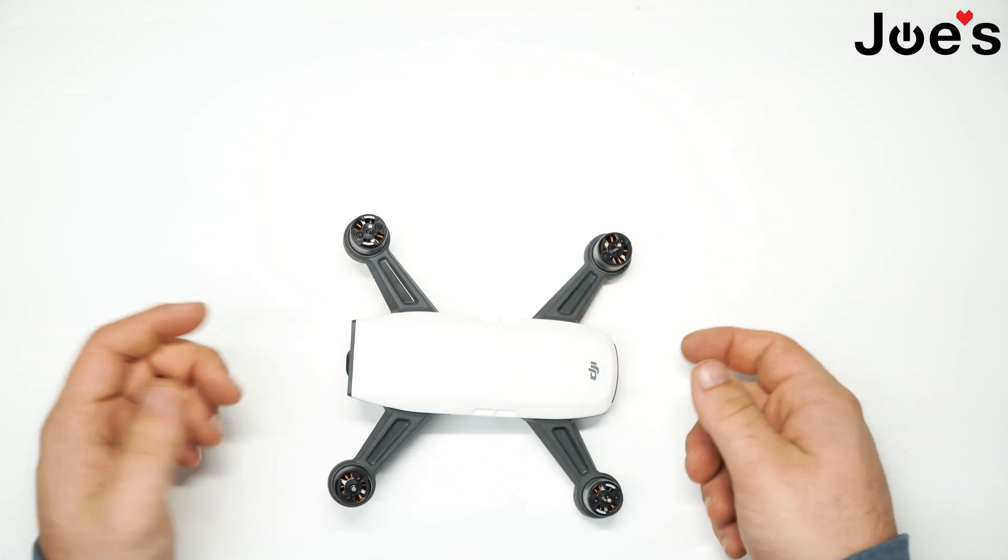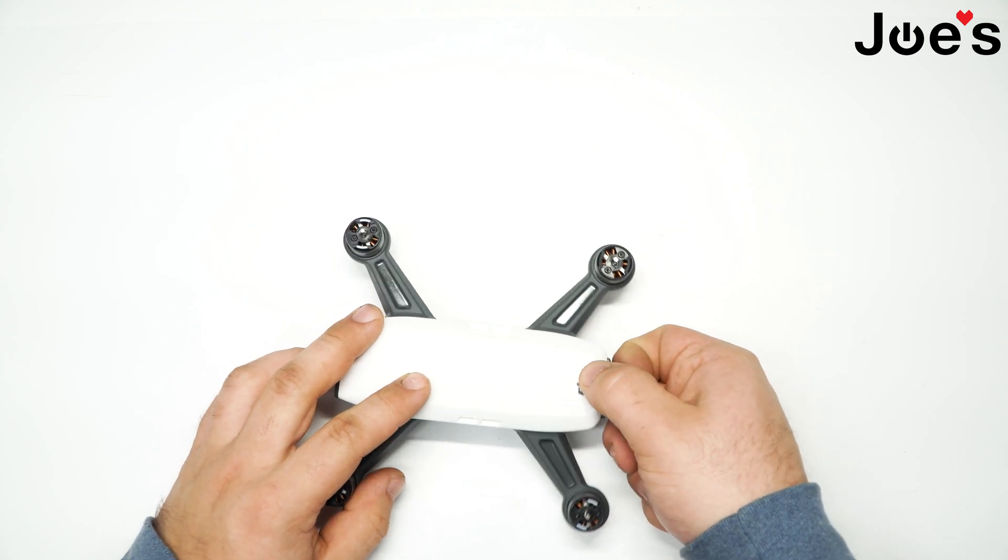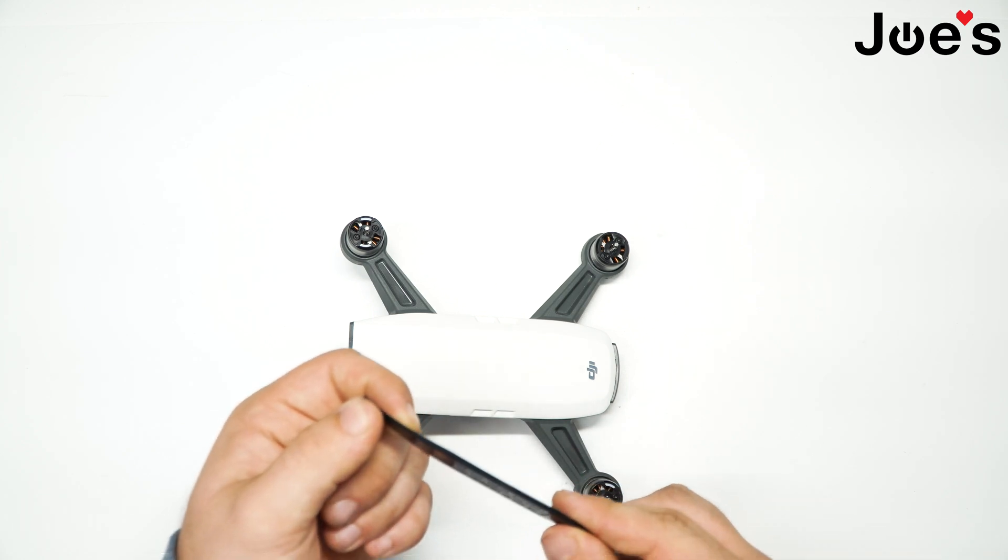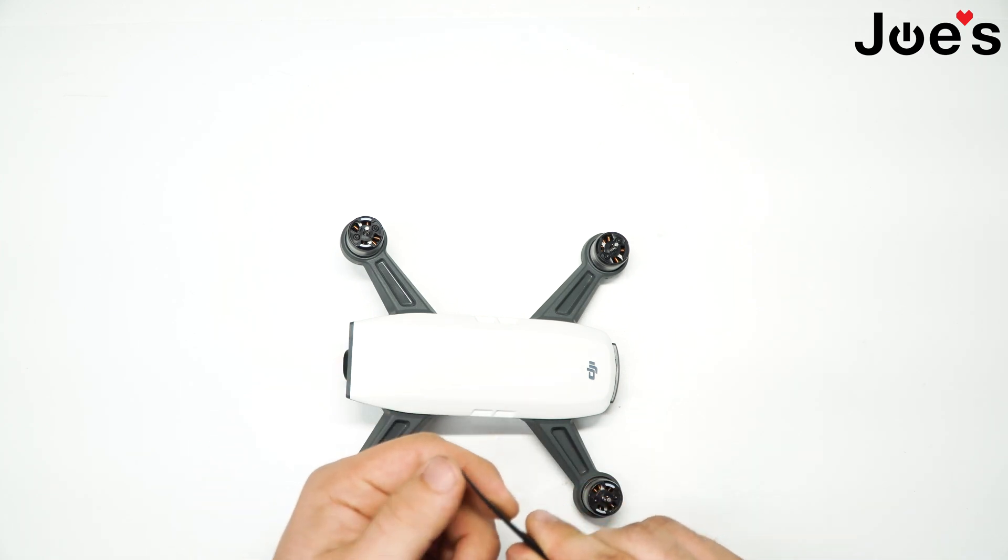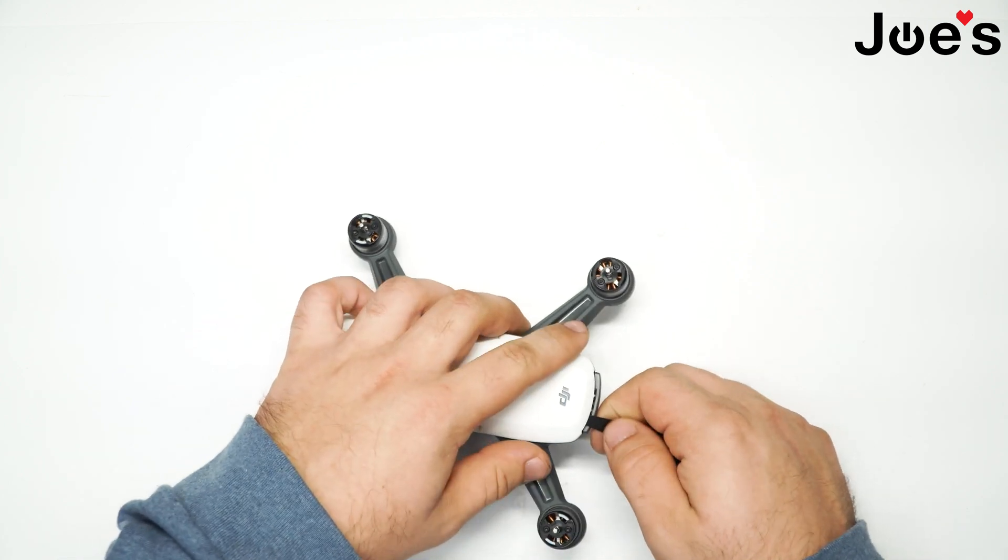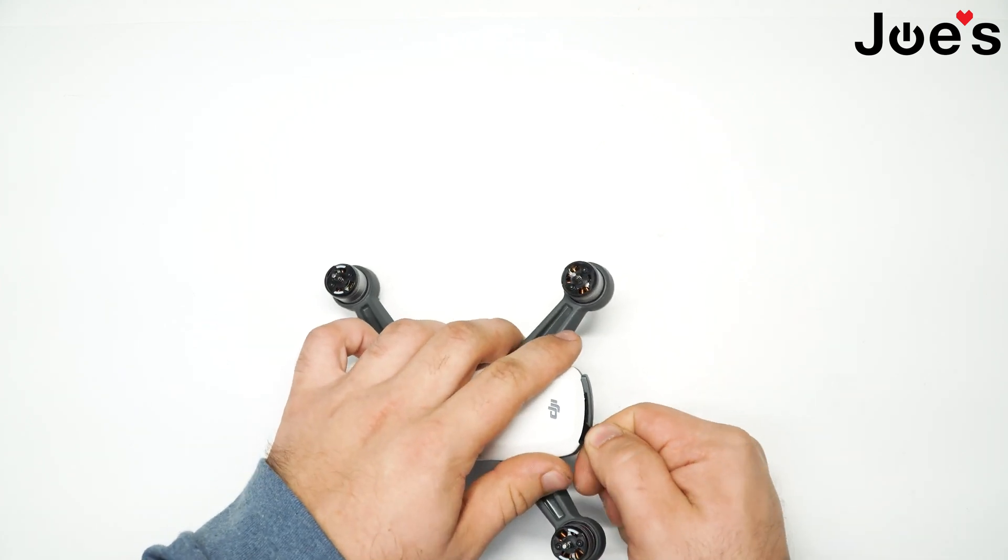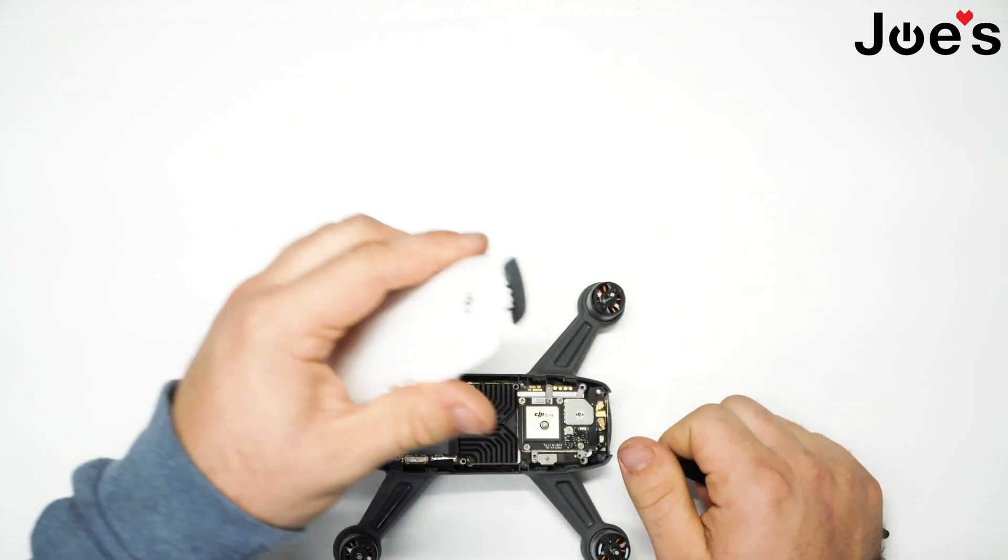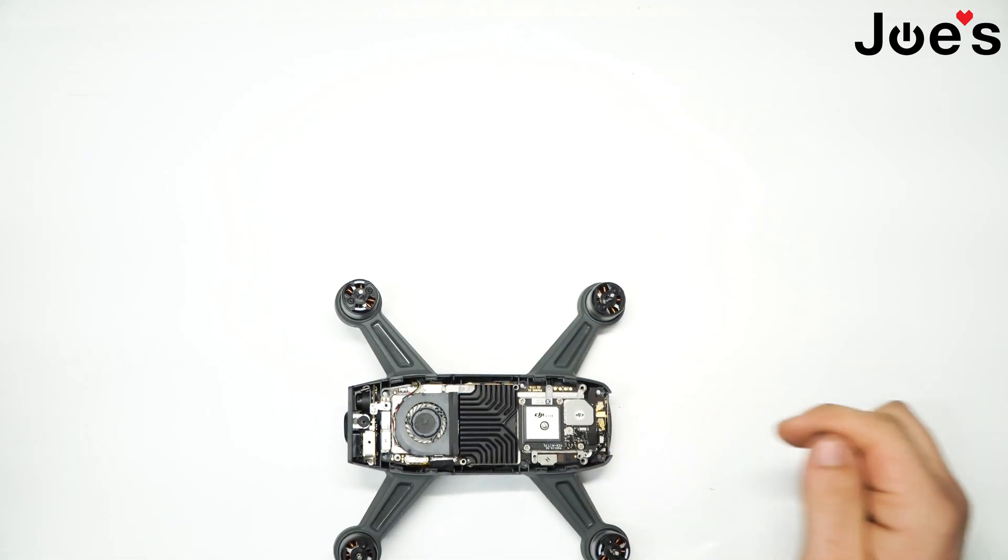Flip it over now. Once those six screws are out, pop this cover open. You're gonna want to grab your pry tool, which will have a thinner end and a thicker end. I like to use the thicker end as it gives you a little bit more room to move. Just work it under there with a little bit of pressure, and your cover pops off. Place that to the side.